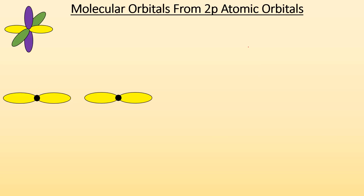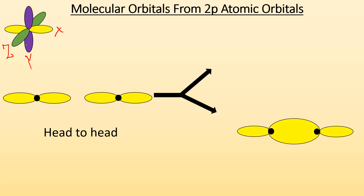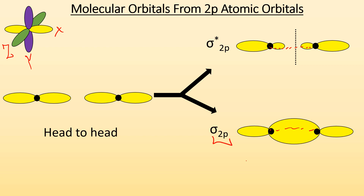Now we're getting into the p orbitals. What do the molecular orbitals look like from the p atomic orbitals combining? We have three p orbitals — generally called x, y, and z. The p orbitals can overlap head to head, giving two molecular orbitals: one where they overlap and combine, and one where they repel each other with a node in between the two nuclei. We call these the sigma 2p and the sigma star 2p — it's sigma because it's along the internuclear axis.